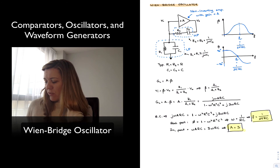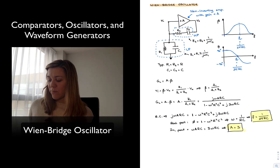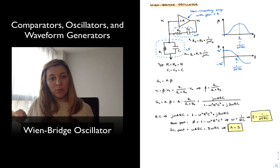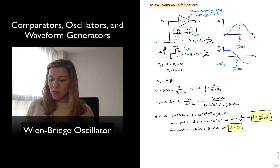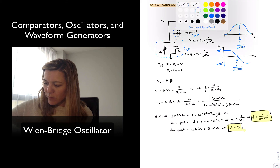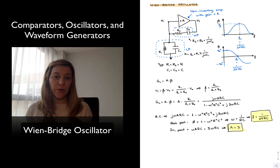The Barkhausen criterion is met when the gain is equal to 3 for the non-inverting amplifier. Since that is the condition making the overall loop gain equal to 1, we must conclude that the gain of beta at the resonant frequency is equal to 1/3.